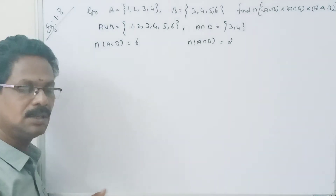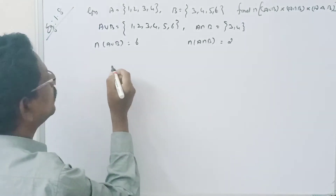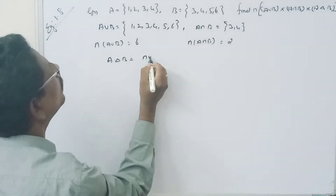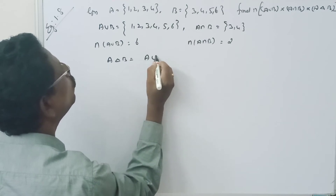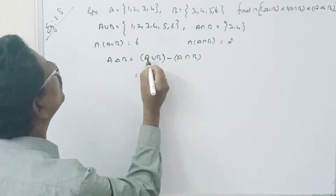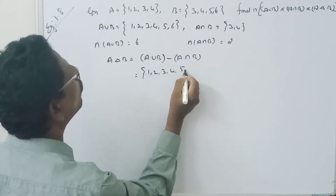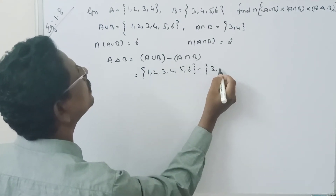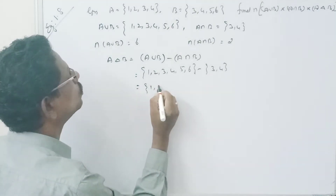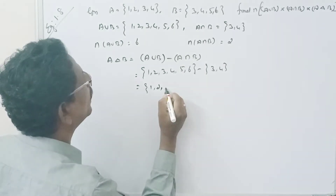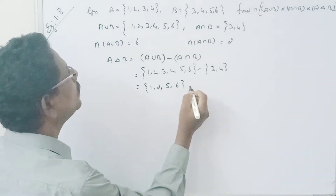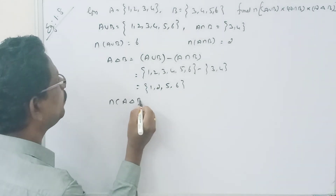Now, A symmetric difference B equals A union B minus A intersection B. So it is {1, 2, 3, 4, 5, 6} minus {3, 4}. We take 1, 2, skip 3 and 4, then take 5 and 6. So the number of A symmetric difference B equals 4.